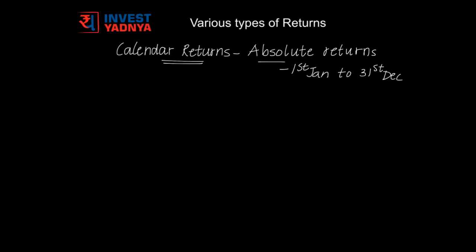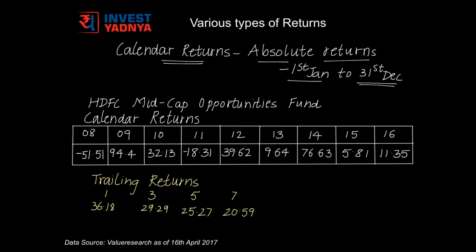Calendar returns are nothing but absolute returns from 1st of January to 31st of December each calendar year. What you see in front of you are calendar returns and trailing returns of HDFC Mid Cap Opportunities Fund. Calendar returns would tell you how the fund has performed in market rises and market falls. 2008, 2011 and 2013 were bad years for the market. In these years, the fund was able to contain its losses better than the index it follows — Nifty Free Float Mid Cap 100. In 2013, the fund was even able to deliver positive returns of around 10%. Don't forget to compare the returns of the fund with that of the index to see how the fund contained losses when markets fell.